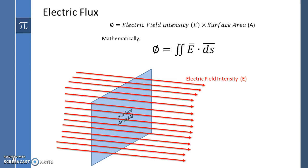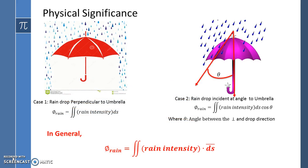Let us move ahead and understand what is the physical significance of electric flux. For example, take the analogy of an umbrella. In case one, the rain droplets are incident perpendicularly on the area of the umbrella passing through. And hence, the flux of rain is surface integral of rain intensity into the surface area.